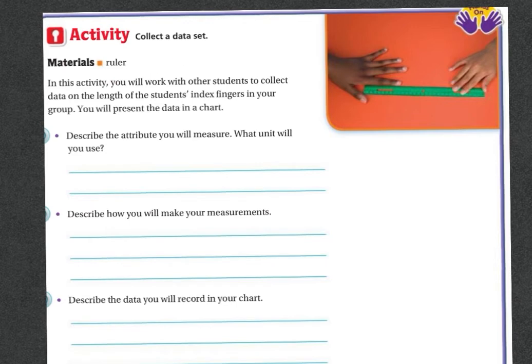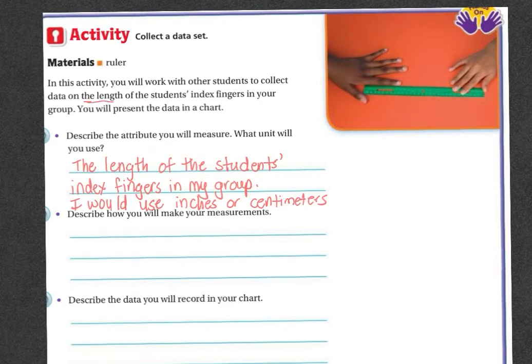In this next activity, it's hands-on in class. In this activity, you will work with other students to collect data on the length of students' index fingers in your group. You'll present the data in a chart. We can kind of do some of this virtually, so we're going to do that together. Describe the attribute you would measure. What unit would you use? So we're going to use the length of the student's index fingers, and I would use inches or centimeters to measure.